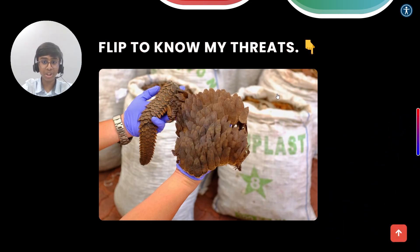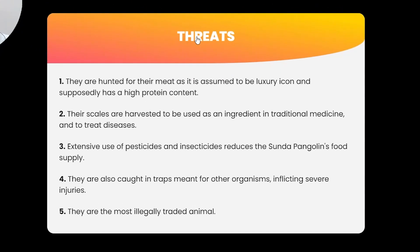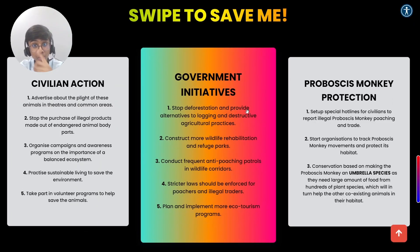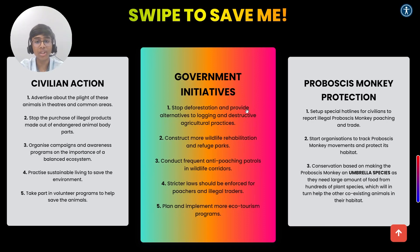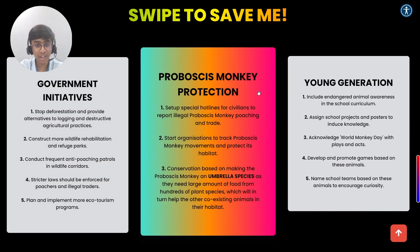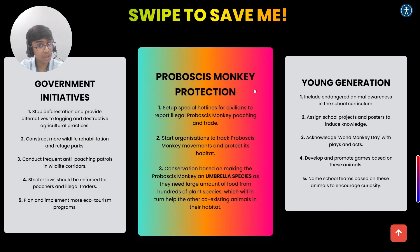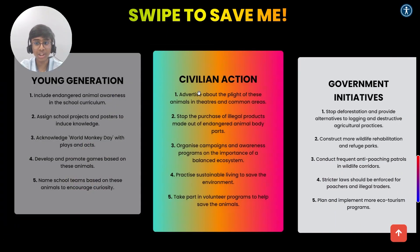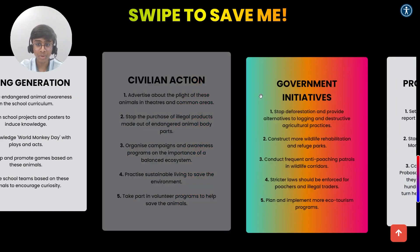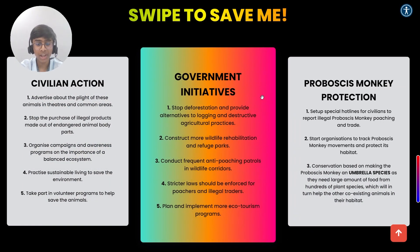This little widget can be clicked upon and flipped for more information on its threats. As you scroll down, you can swipe to save the animal by reading about the potential solutions, divided into government initiatives, further protection, young generation and civilian action. On focus, these cards become a linear gradient background for further highlighting.